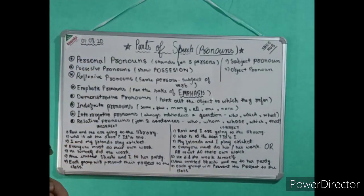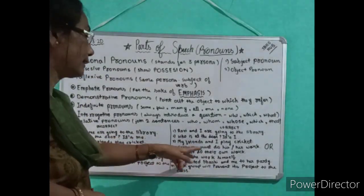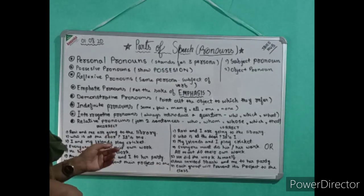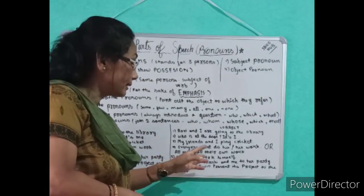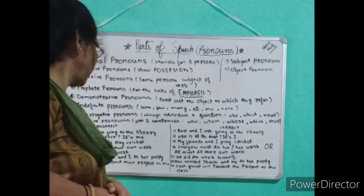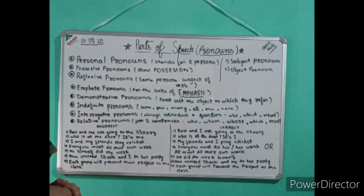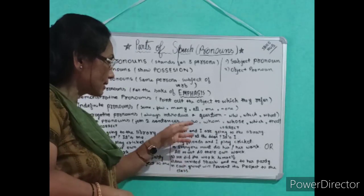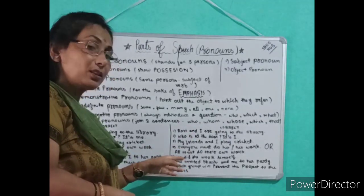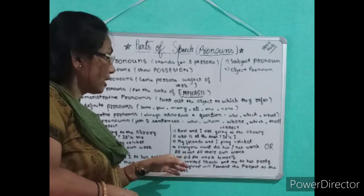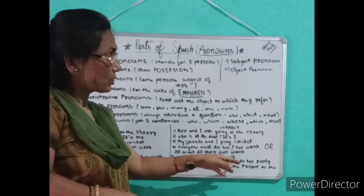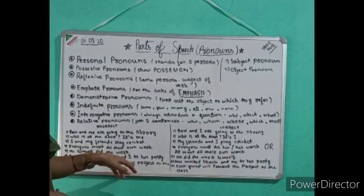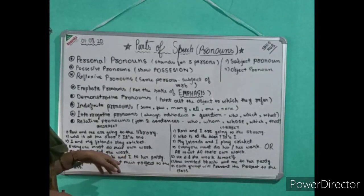Next: 'He himself did the work' — correct form: 'He did the work himself.' 'Anu invited Sassi and I to her party' — wrong. Correct: 'Anu invited Sassi and me to her party.' 'Each group will present their project to the class' — wrong. Correct: 'Each group will present its project to the class.' 'Each' stands for singular, so the possessive pronoun should also be singular — 'its,' not 'their.'